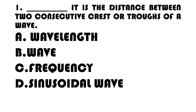Number 1. Blank is the distance between two consecutive crests or troughs of a wave. A. Wavelength. B. Wave. C. Frequency. D. Sinusoidal Wave.